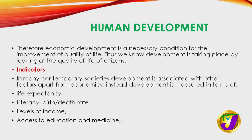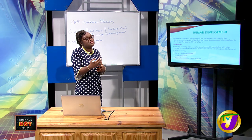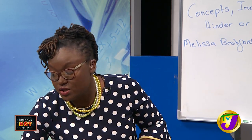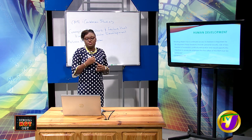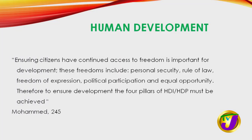Some indicators of human development include life expectancy, literacy rates, birth and death rates, levels of income and income parity, as well as access to education and medicine. These are basic human requirements. If people are unable to access these things, then human development is not happening. As this quote states: ensuring citizens have continued access to freedom is important for development. These freedoms include personal security, rule of law, freedom of expression, political participation and equal opportunity.